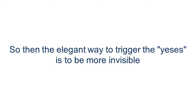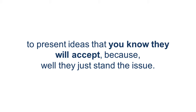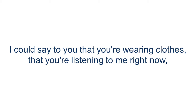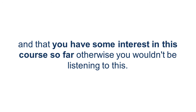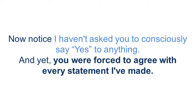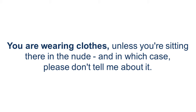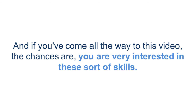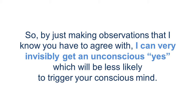An elegant way of getting yeses is to be more invisible — to present ideas that you know they will accept because they're just standard. For example, I could say to you that you're wearing clothes, that you're listening to me right now, and that you've had some interest in this course, otherwise you wouldn't be listening. Now notice I haven't asked you to consciously say yes to anything, and yet you are forced to agree with every statement I've made. By just making observations I know you have to agree with, I can very invisibly get an unconscious yes, which will be less likely to trigger your conscious mind.